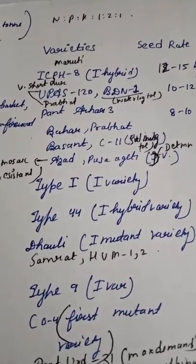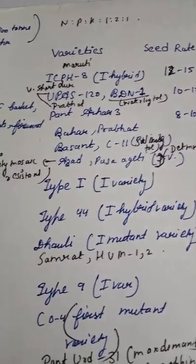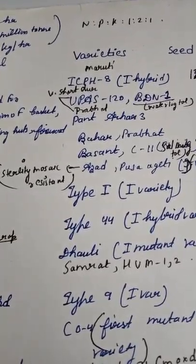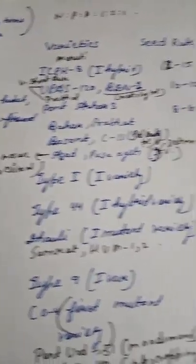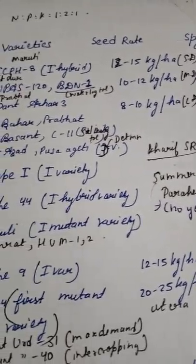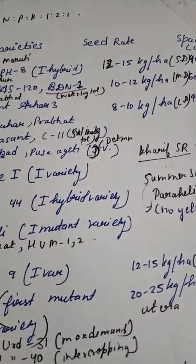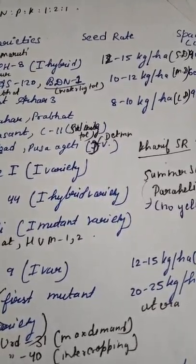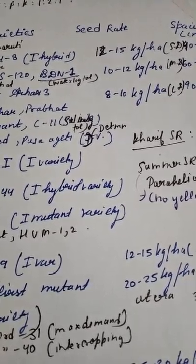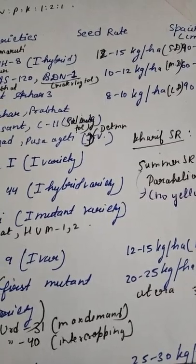Bahar, Prabhat, and Basant are very important PGNP varieties. C11 is a salinity tolerant variety. Pusa Ageti is a determinate variety of PGNP. Azad is the sterility mosaic resistant variety of PGNP. Regarding seed rate: short duration variety 12–15 kg per hectare, medium duration 10–12 kg per hectare, and long duration variety 8–10 kg per hectare.